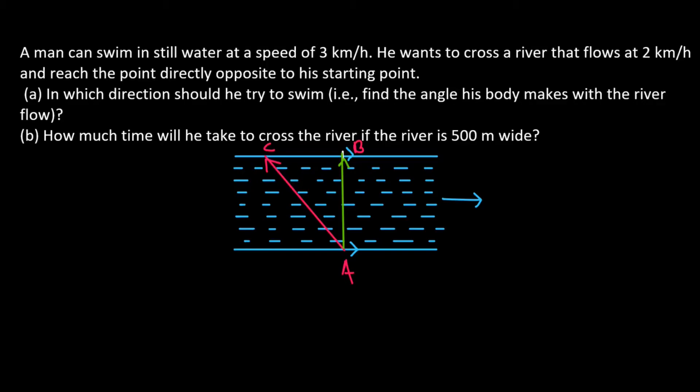AC is the velocity of man with respect to the river. And AB is the velocity of man with respect to the ground. And this is the velocity of river with respect to the ground.